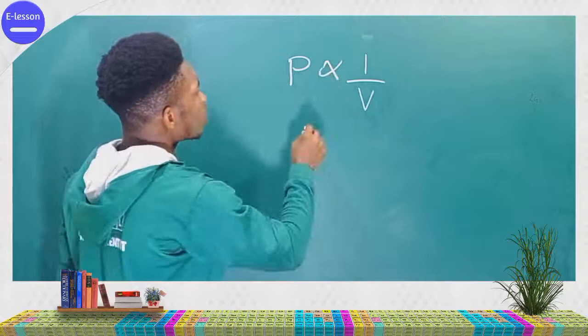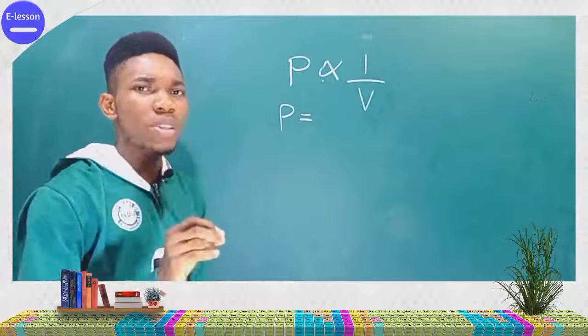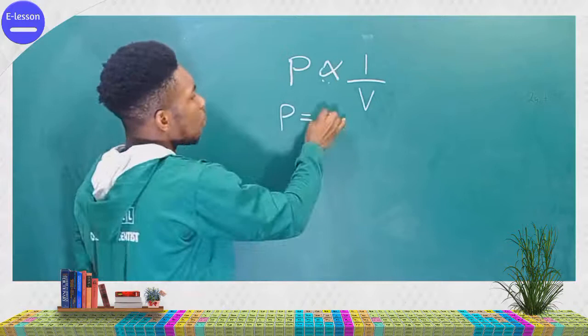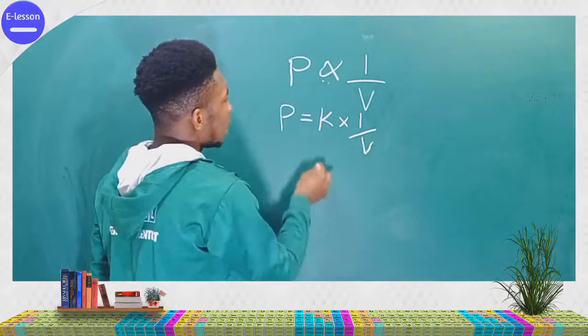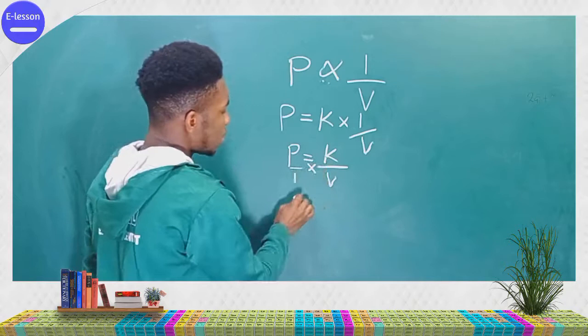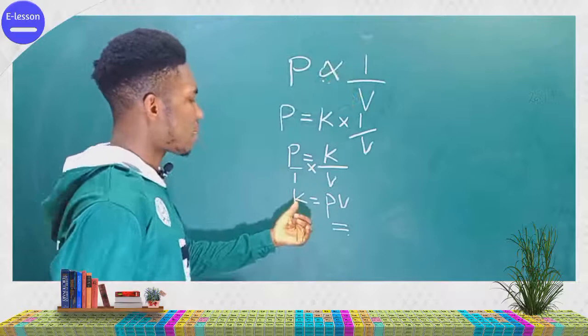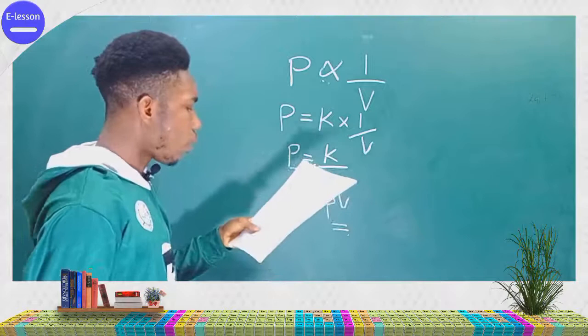If you change the proportionality symbol to an equals sign, you introduce a constant k. So this becomes P = k × (1/V), which simplifies to P = k/V. Cross-multiplying gives k = PV. So the mathematical representation of Boyle's law is either P = k/V, or k = PV, or PV = k.